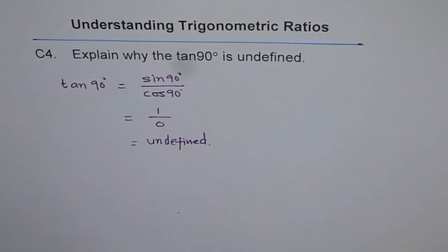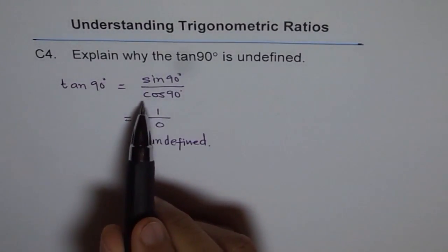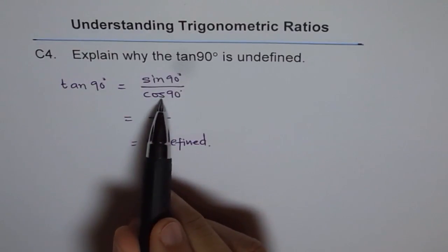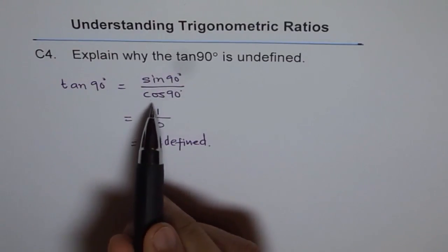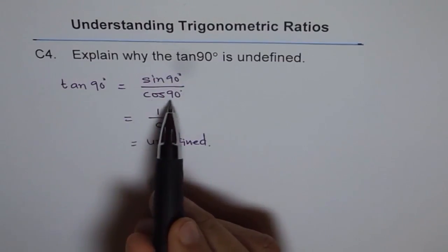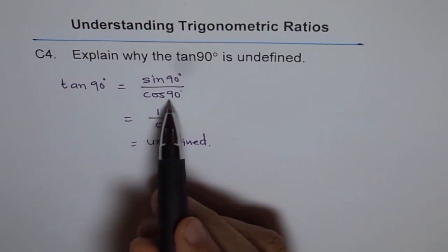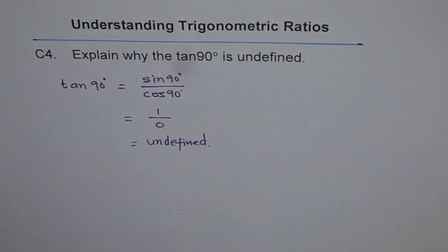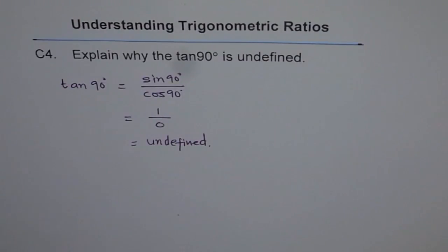Tan itself has a restriction: the angle cannot make the denominator zero. Cosine is zero for many angles — specifically multiples of 90 — and it repeats after every 180 degrees. Since you cannot divide by zero, 1 over 0 is undefined, and therefore tan of 90 degrees is undefined.